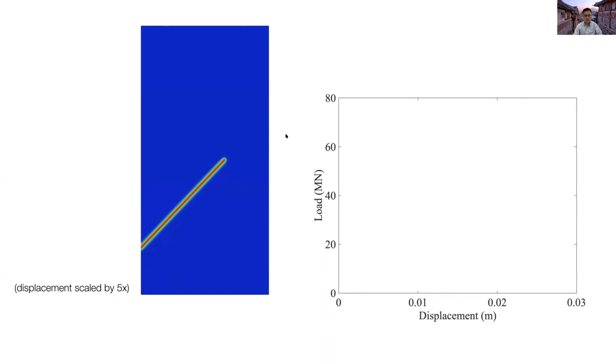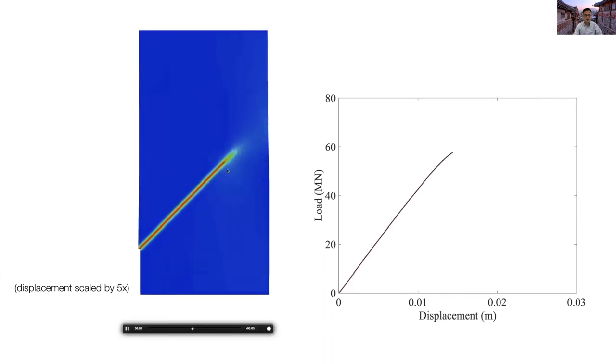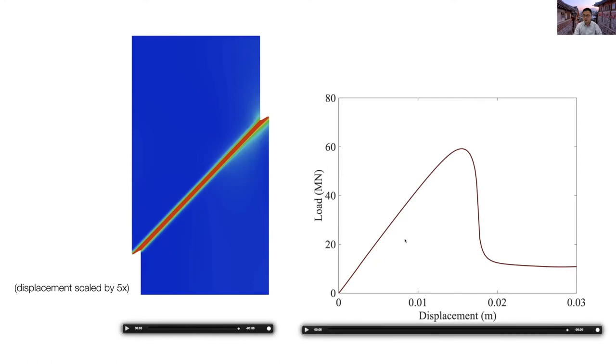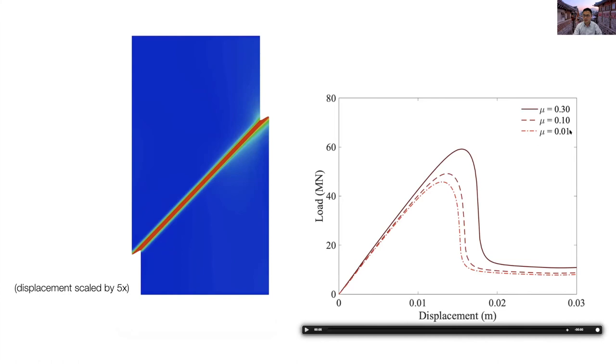Here is the simulation result. As you can see, the crack propagates to the right boundary, and the specimen will fail. On the right-hand side, I showed load displacement curve. And then as you can see, the load displacement curve changed with friction coefficient mu.